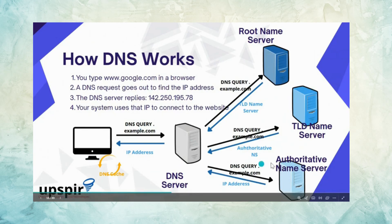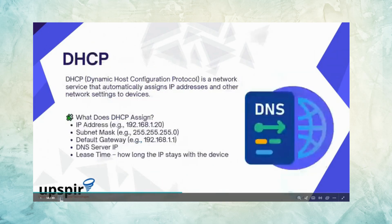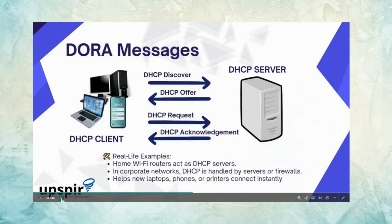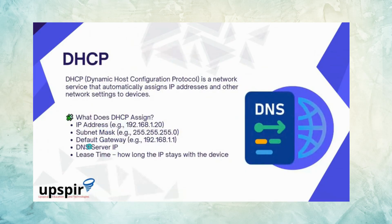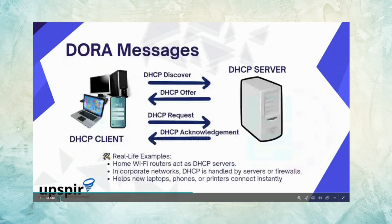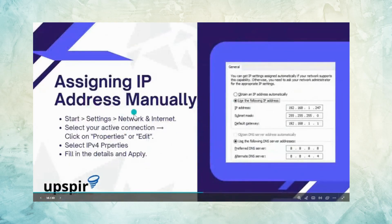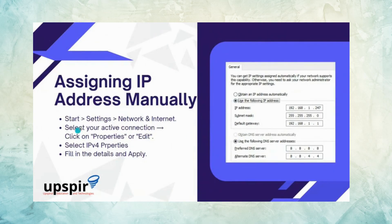This DNS resolution process is not critical to memorize but is good to know. For DHCP, the important thing is that from the DHCP server you get your IP address, subnet mask, default gateway, DNS server IP, lease time, and so on — these are the DORA messages discussed earlier. On a Windows machine, you can manually assign an IP address by going to network and internet settings, clicking your connection, selecting properties, and configuring IPv4 properties.